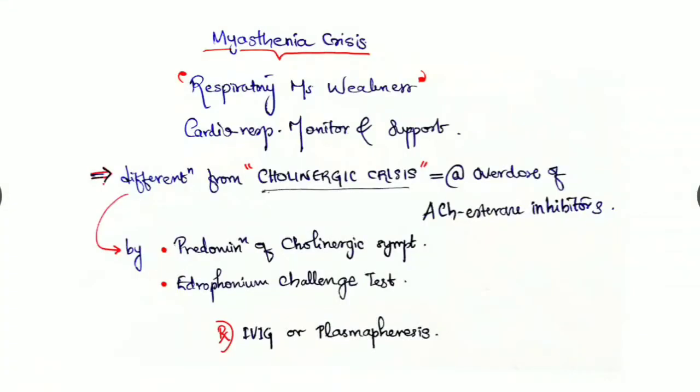Myasthenic crisis is respiratory muscle weakness requiring good cardiorespiratory monitoring and support. We have to differentiate this from cholinergic crisis, which is due to overdose of acetylcholinesterase inhibitors.